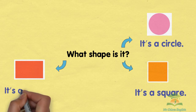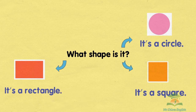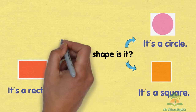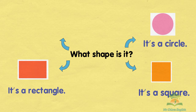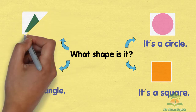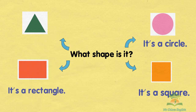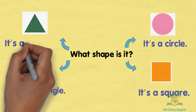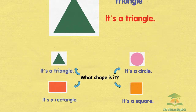It's a square. It's a square. It's a triangle. It's a triangle.